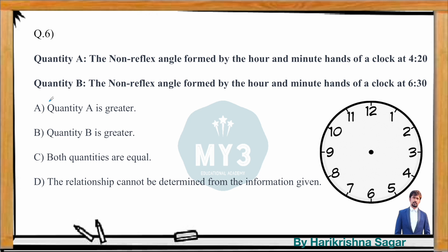Next comparison: angle at 4:20 versus angle at 6:30. At 4:20, the hour and minute hands both point towards 4, so there's no gap from hours — only a 20-minute tilt: 20/2 = 10 degrees. Quantity A = 10°. At 6:30, both hands point towards 6, with 30-minute tilt: 30 × 0.5 = 15 degrees. Quantity B = 15°. Since 15 > 10, Quantity B is greater.